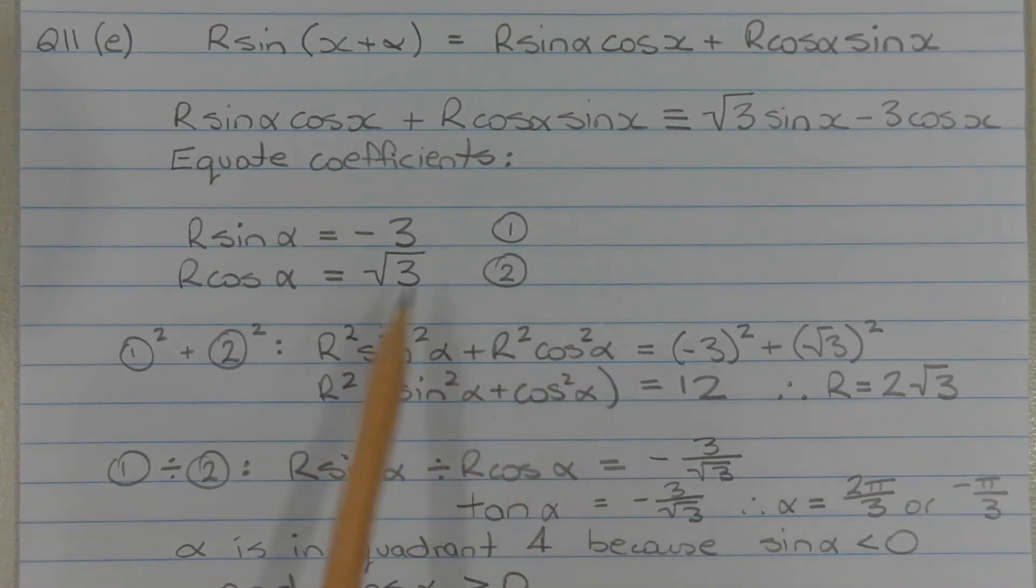Factorizing out r squared on the left-hand side, we have r squared times sine squared alpha plus cos squared alpha is equal to 12, and sine squared alpha plus cos squared alpha is a Pythagorean identity, which equals 1. r squared equals 12, therefore r is equal to 2 root 3.